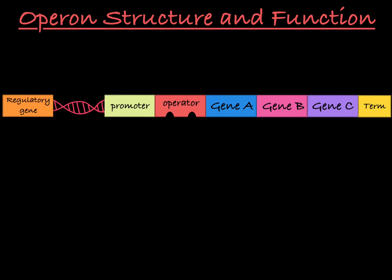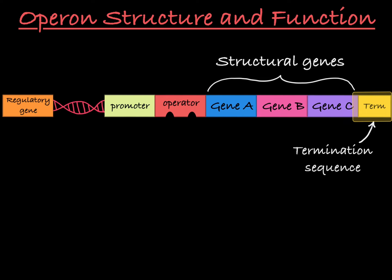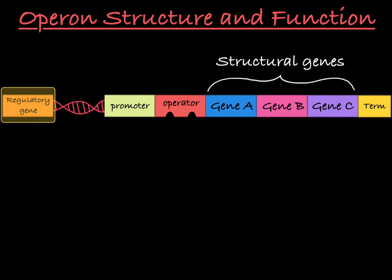This is your basic operon structure: a series of structural genes that share a promoter, an operator, and a termination sequence. In addition to these parts of the operon, a key player in the expression of these structural genes is the regulatory gene, in this case located upstream of the operon.